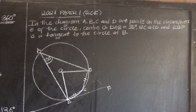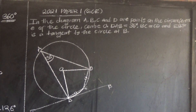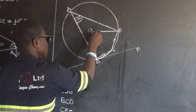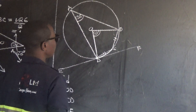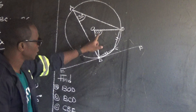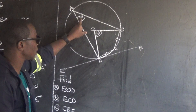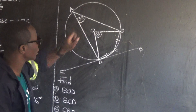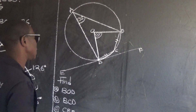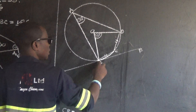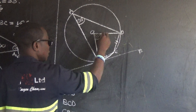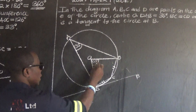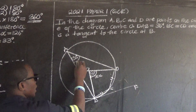Question A says: find angle BOD. This is the angle we want — angle BOD. This one is simple. We know that this is the angle at the center, and you have the angle on the circumference. So if you want to find the angle at the center, you multiply by 2 — that is, 2 multiplied by the angle on the circumference.